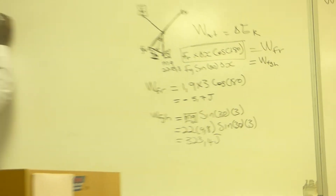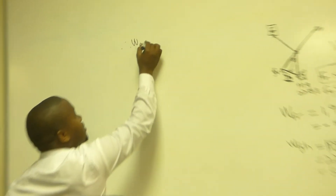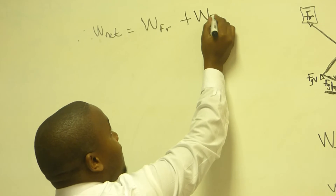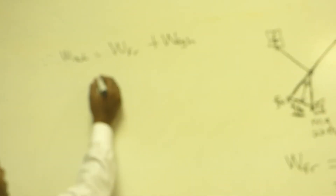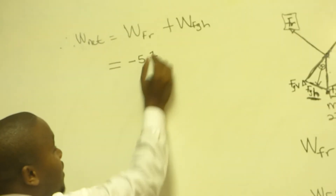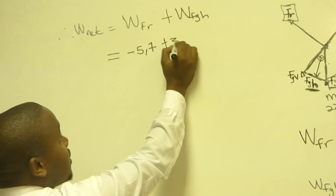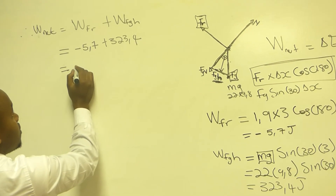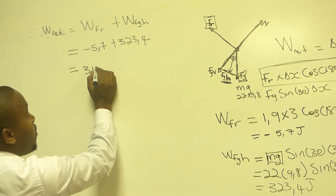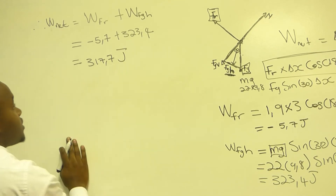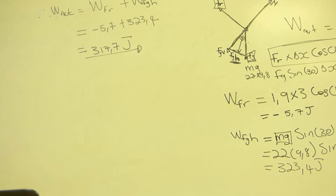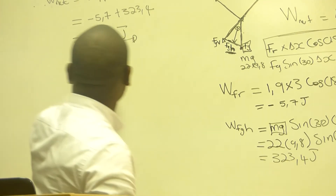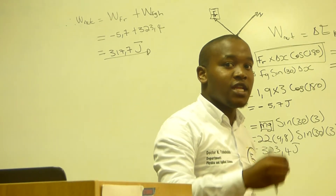Now let's find the net work. Work net equals work done by friction plus work done by Fg parallel: negative 5.7 plus 323.4, which gives 317.7 joules. Now we apply the work-energy theorem: the net work done on an object is equal to the change in kinetic energy.